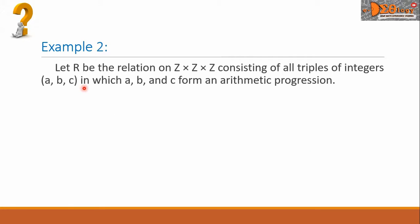Example 2. Let R be the relation on Z times Z times Z, consisting of all triples of integers A, B, C, in which A, B, and C form an arithmetic progression.